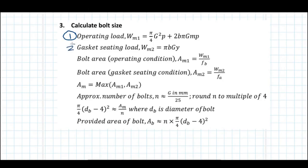The second load case is corresponding to the gasket seating load. This is where there is no internal pressure and the calculations are done at ambient temperature. Once we understand this concept, the loads are calculated using the expressions for wm1 and wm2.